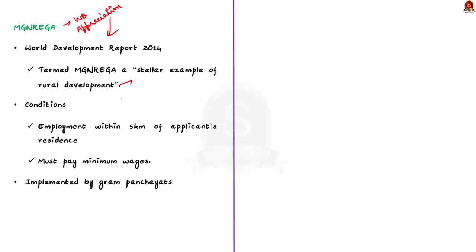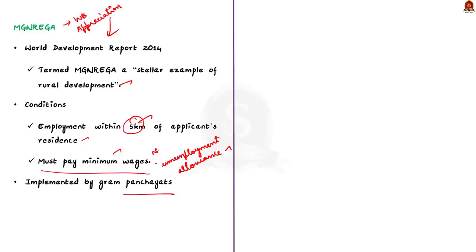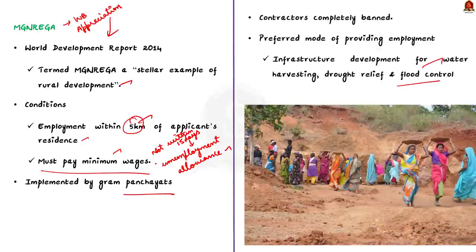Conditions for providing employment under the act include: employment is to be provided within 5 km of an applicant's residence, minimum wages are to be paid, and if work is not provided within 15 days of applying, applicants are entitled to an unemployment allowance. Employment under MG NREGA is thus a legal entitlement. The scheme is implemented mainly by Gram Panchayats, and employment of contractors is completely banned. Labour-intensive tasks like creating infrastructure for water harvesting, drought relief, and flood control are the preferred mode. The nodal ministry tasked with implementation is the Ministry of Rural Development.